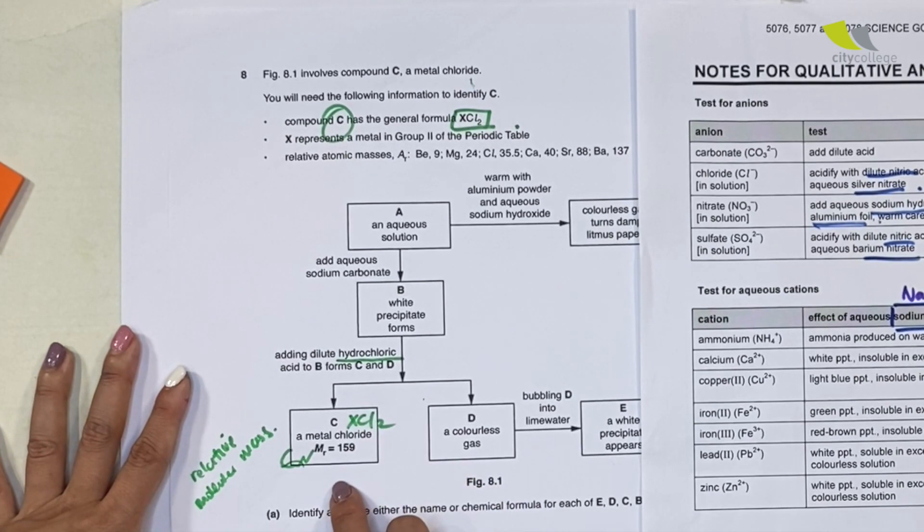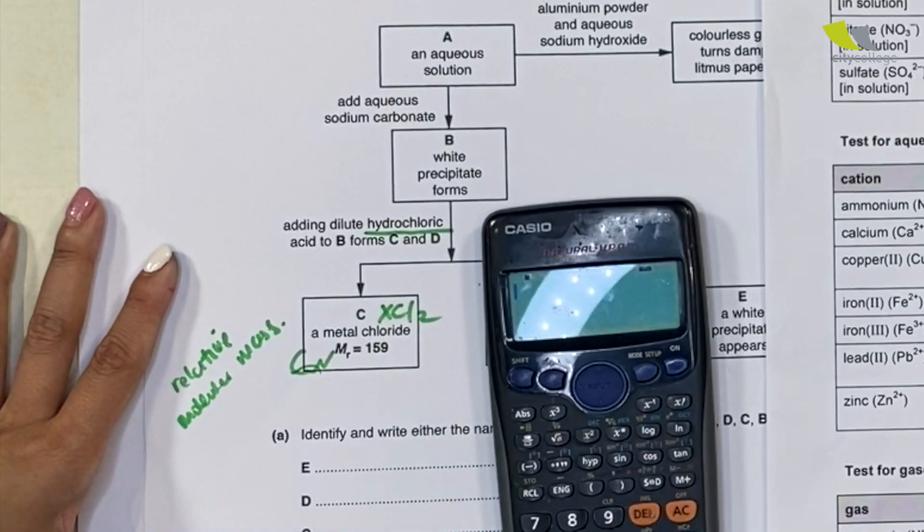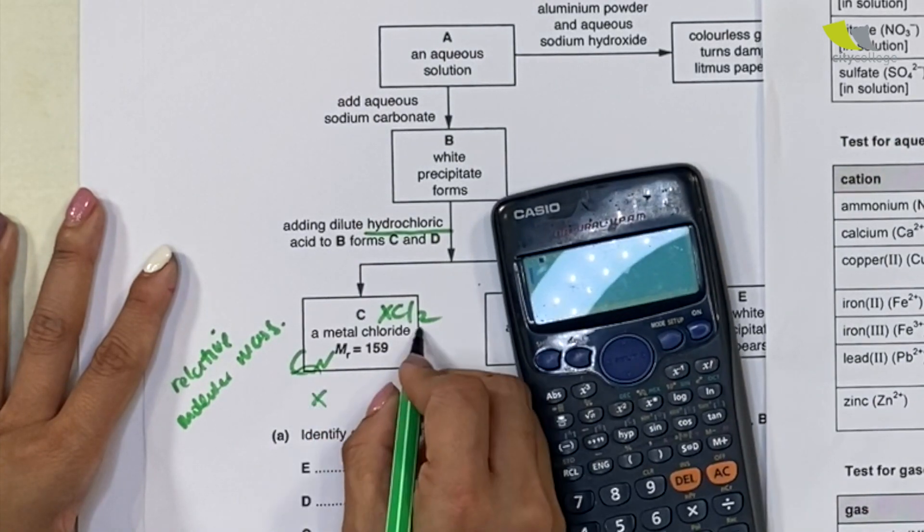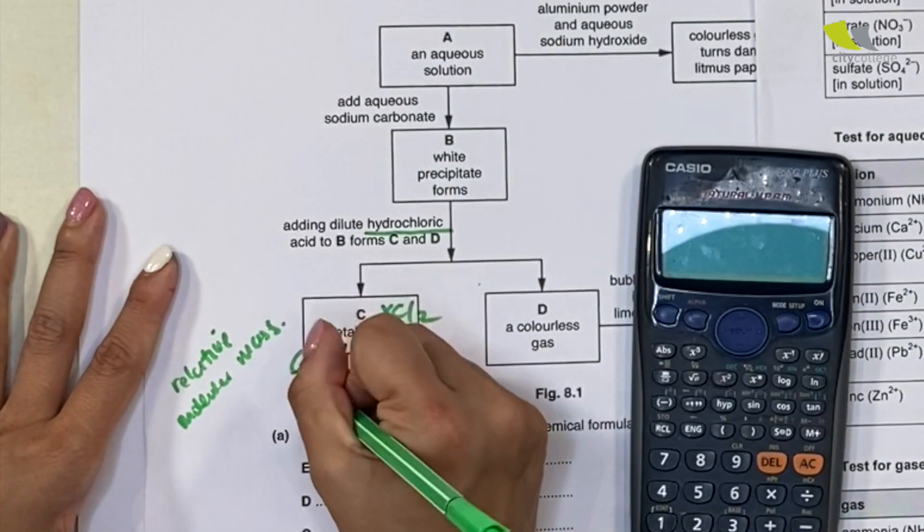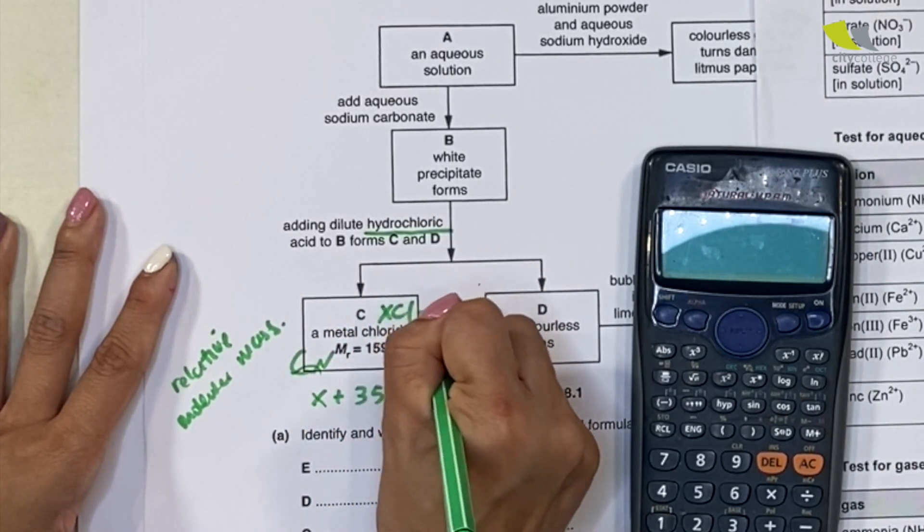If I use a calculator quickly, I can find it out because X is my unknown—I don't know—but I do know my Cl. One Cl is 35.5 times 2 because there are two.